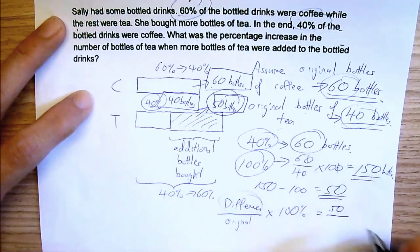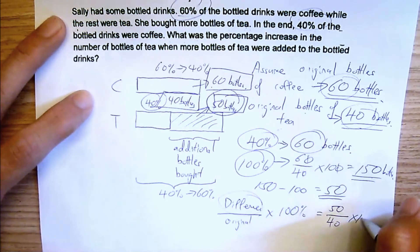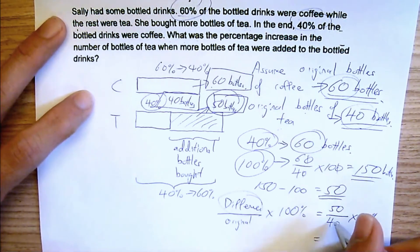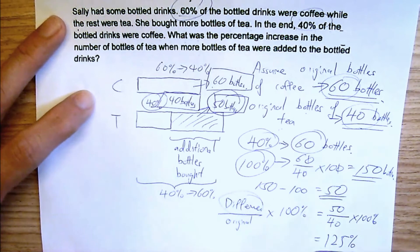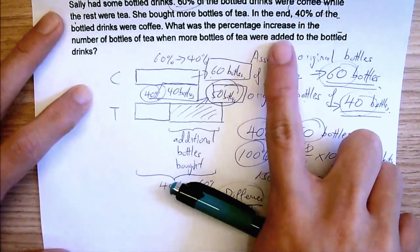So the difference would be 50 over original, original is 40 bottles. 40 multiplied by 100%. So throw this into your calculator and you're going to get 125%. So there was an increase of 125% when more bottles of tea were added to the bottled drinks.